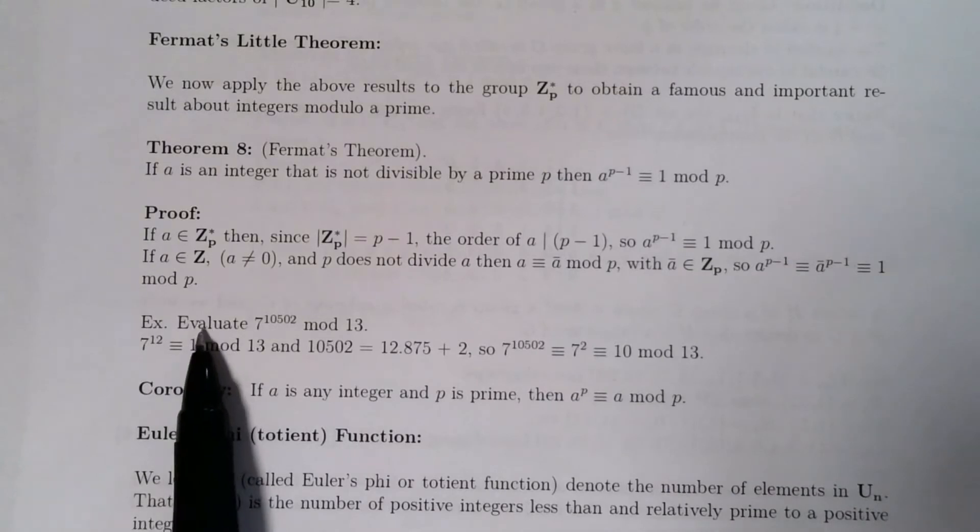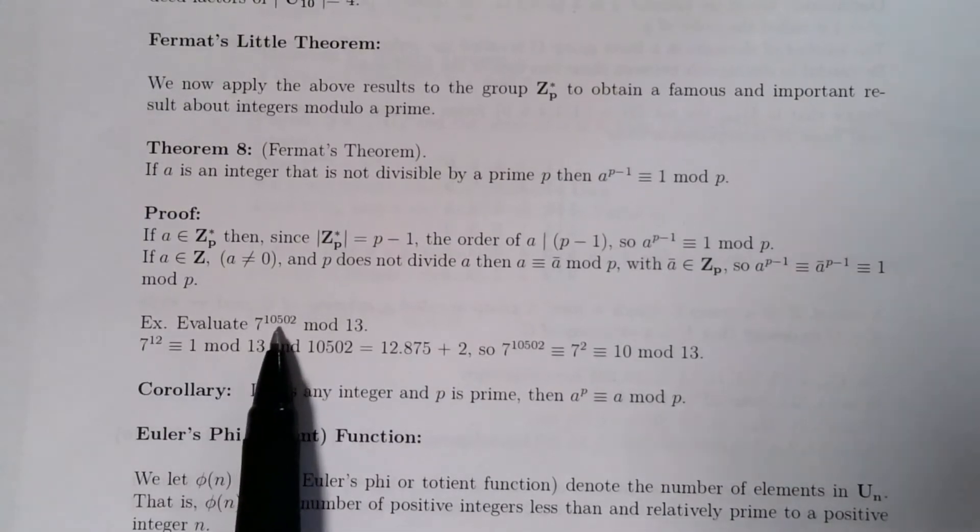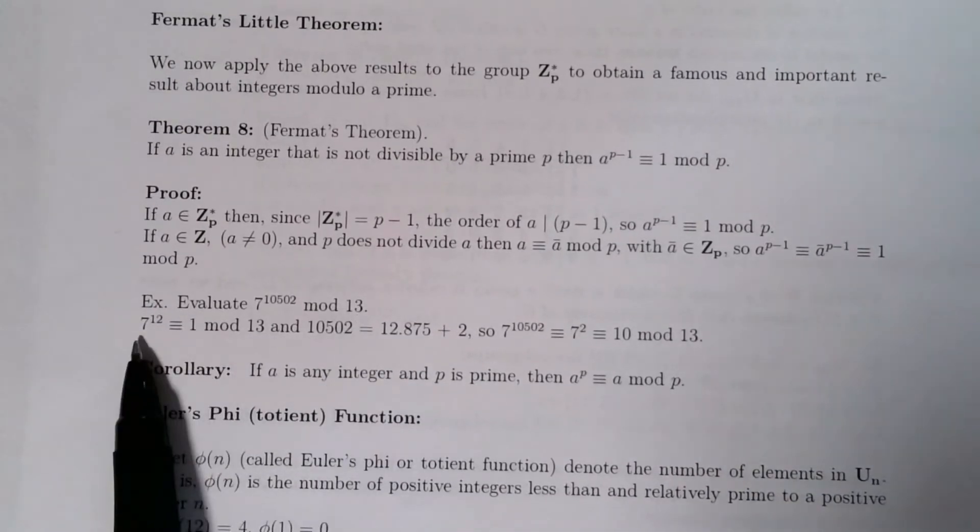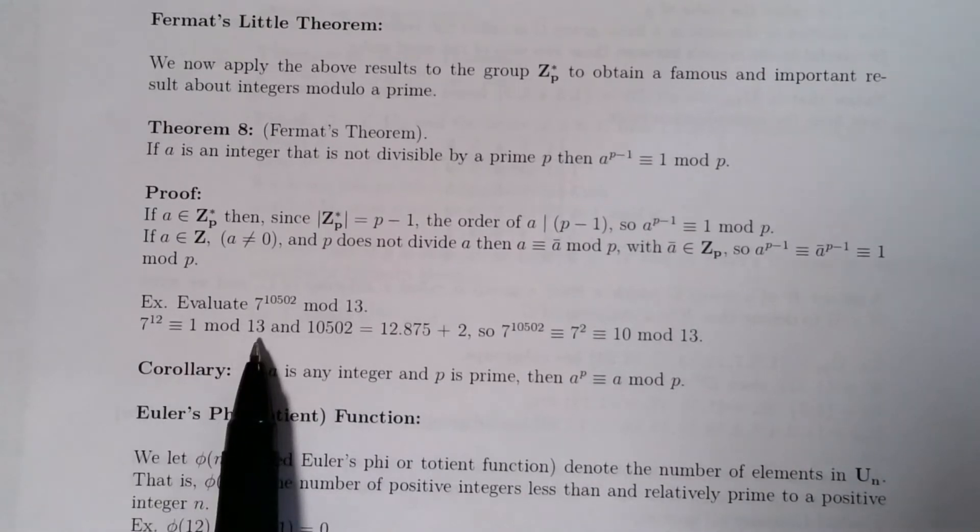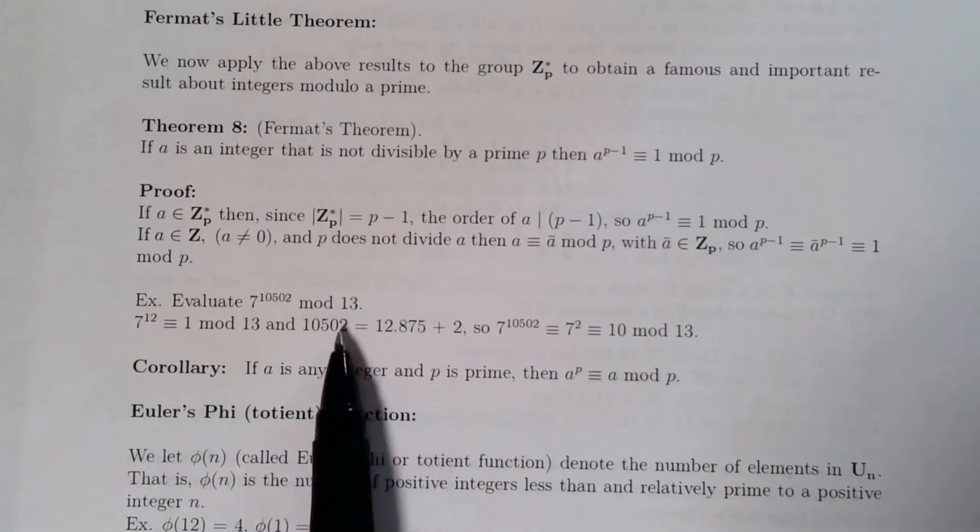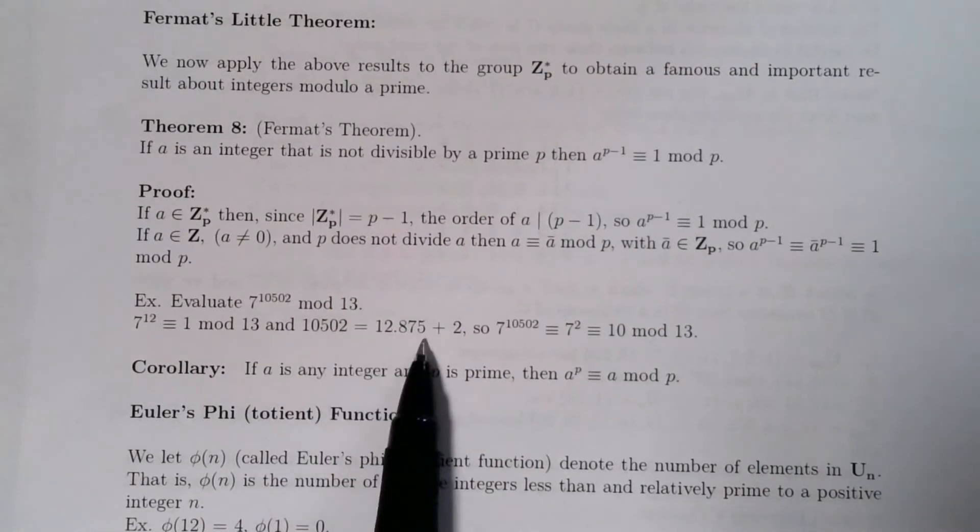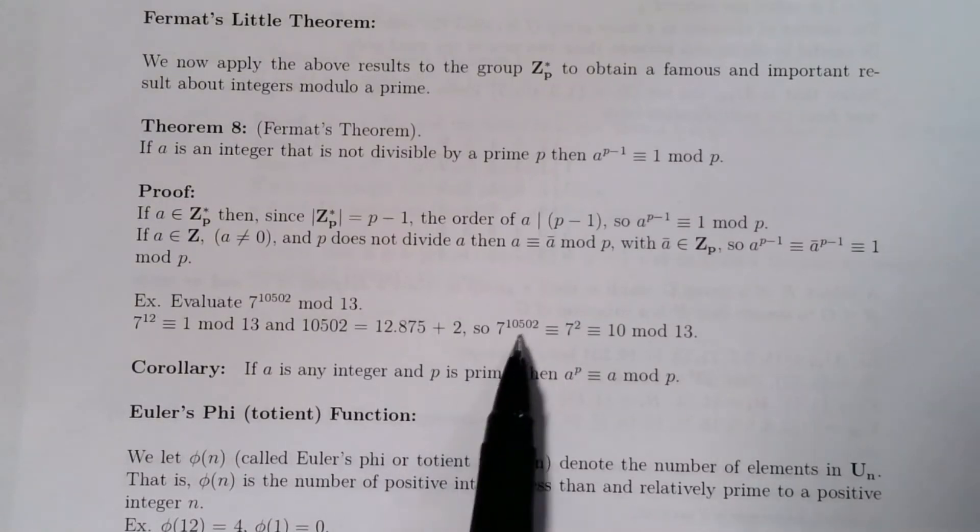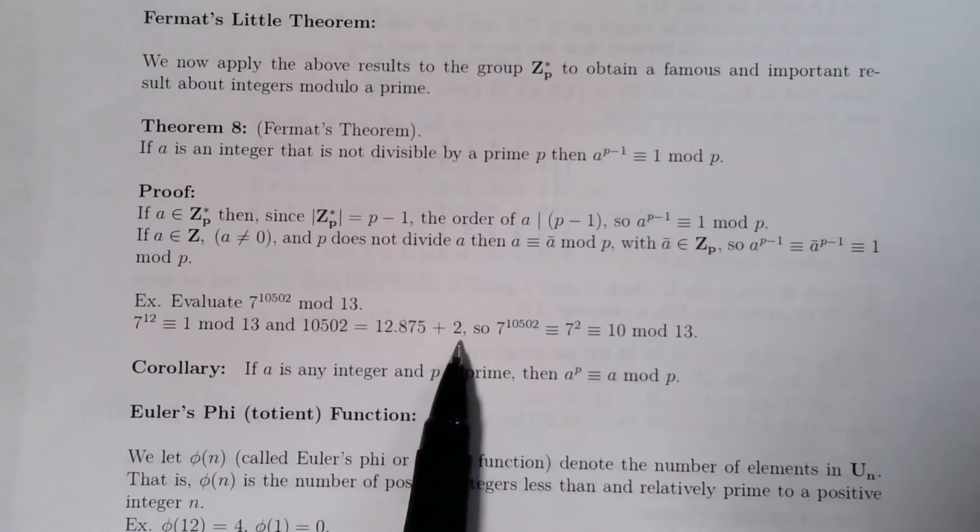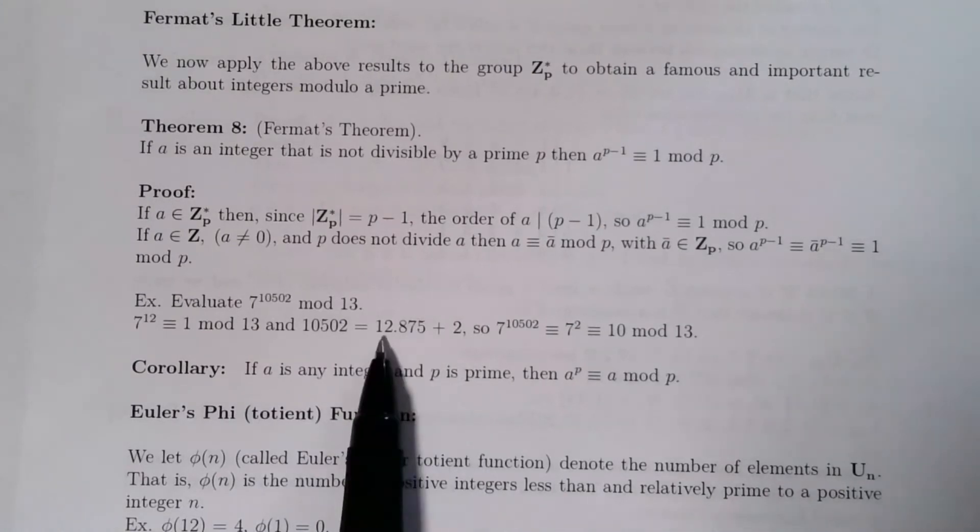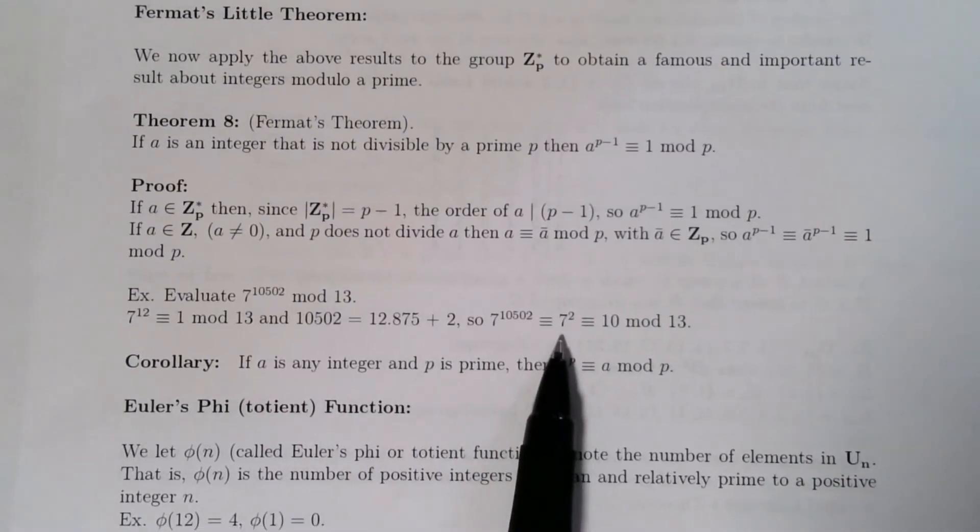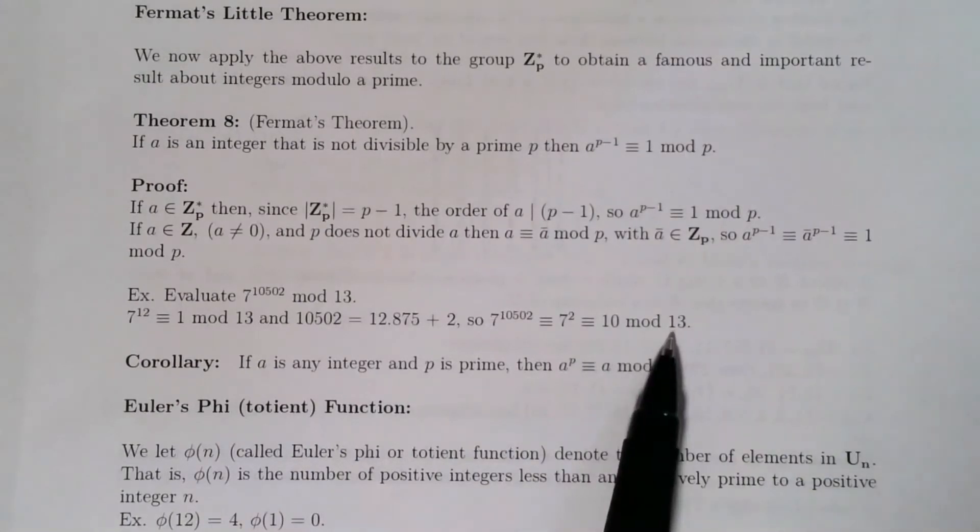As an example, we can evaluate 7^10502 modulo 13. So I begin by just writing down from Fermat's little theorem, 7^12 has to be 1 mod 13. And then I just do a little division here, and I get this number is 12 times 875 plus a remainder of 2. And that means 7 to this power is 7^12 raised to the 875, but 7^12 is 1. So this comes out to just give you 1, and all you get left is 7^2, which is 49, and 49 is 10 modulo 13.